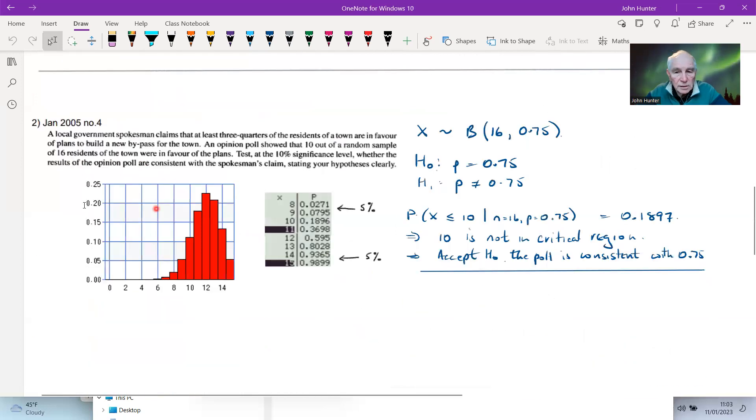So that is that one. Let's have another look at this one. And this one here, finally, this will do us after this. I think a local government spokesman claims that at least three-quarters of the residents, 75% of residents of town, are in favour of plans to build a new bypass for the town. An opinion poll showed that 10 out of 16 were in favour. Tests at the 10% significance level whether the results of the opinion poll are consistent with this local government spokesman's claim. So I think we're at 10 out of 16 with three-quarters of the residents. It's going to be that would be, if that was true, 0.75, this would be binomial with an N of 16 and a P of 0.75. And our hypothesis, are the results consistent with the spokesman's claim? So that's what we're testing, whether or not P is 0.75, or is it not 0.75?